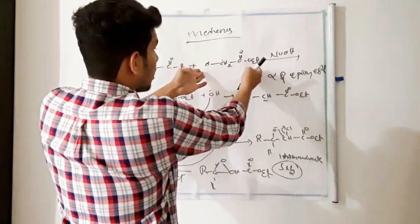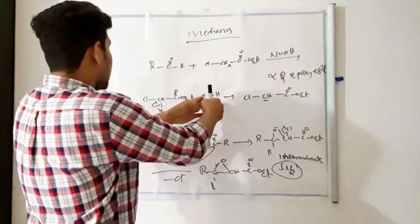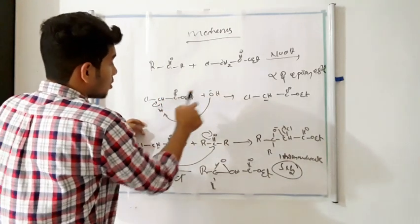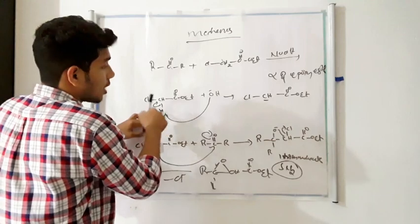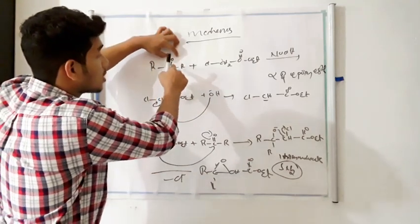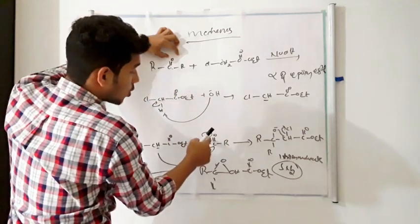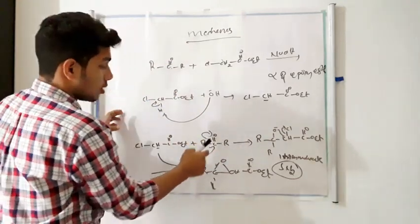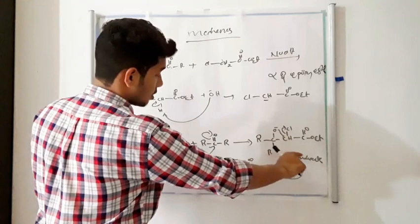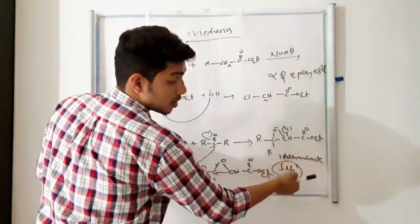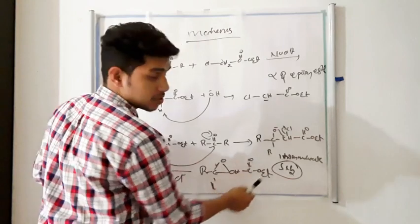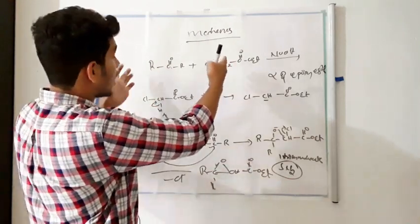To summarize the mechanism: first, the alpha-halogenated ester reacts with NaOH. The OH minus abstracts H plus ions from the alpha-halogenated ester, forming a carbanion. This carbanion attacks the carbonyl compound; oxygen being more electronegative causes the bond to shift, generating a carbon carbanion. Intramolecular attraction and an SN2 reaction follow, and chlorine is eliminated to form the alpha-beta epoxide ester.